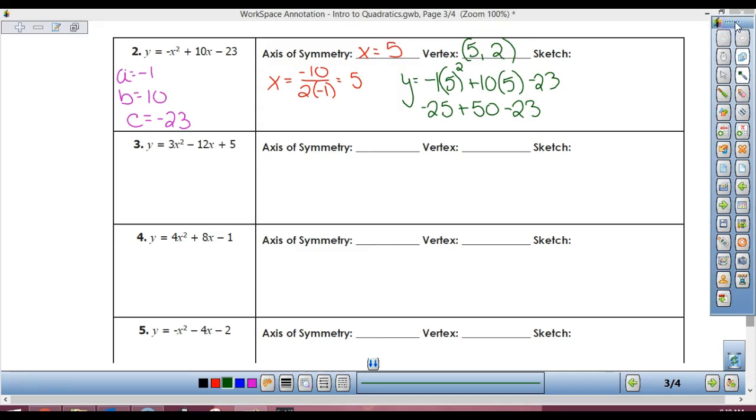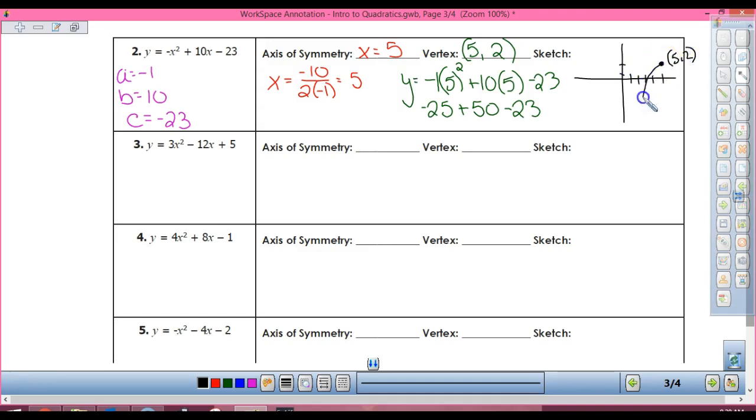So, now my sketch. My sketch doesn't have to be perfect. But we've got to get all of our stuff on there. So, 1, 2, 3, 4, 5, 1, 2, 5, 2. Does this open up or down? Down. So, I labeled my vertex. What else do I have to put on there? The axis of symmetry. And I need to label it: x equals 5. Not so bad, right?